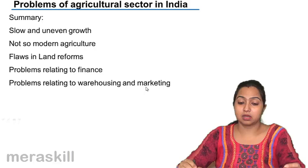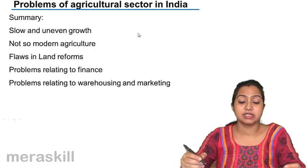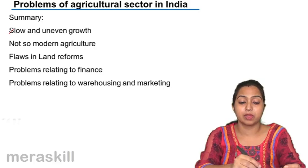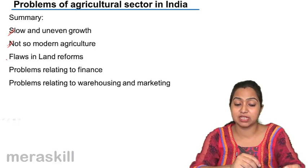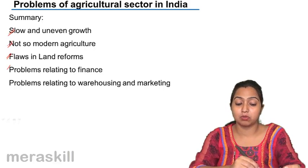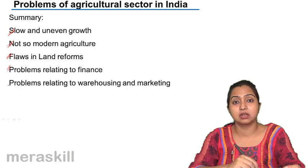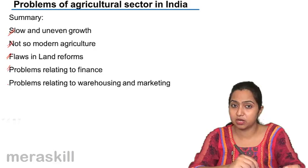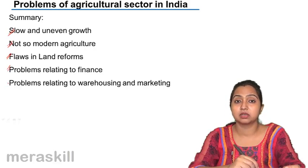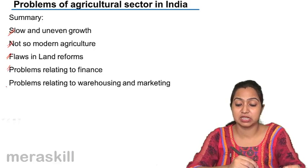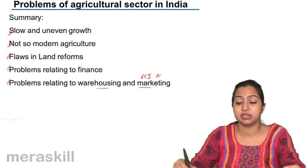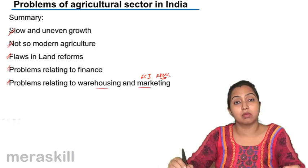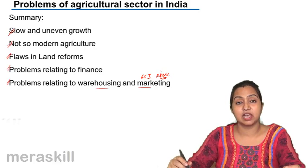In summary, the agriculture sector faces slow and uneven growth due to monsoon dependence, insufficient modernization, flaws in land reforms that have not been completely implemented, and finance problems where 27% of farmers are still dependent on money lenders. There are also problems relating to warehousing and marketing. FCI has been set up for storage, and APMC — Agriculture Product Marketing Committee — markets the food and products.